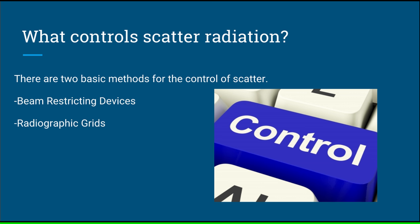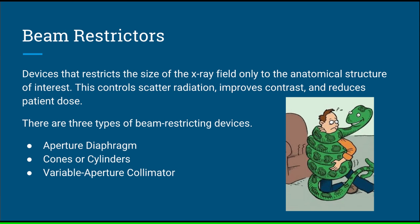What controls scatter radiation? There are two basic methods for the control of scatter: beam restricting devices and radiographic grids. Beam restrictors are devices that restrict the size of the x-ray field only to the anatomical structure of interest. This controls scatter radiation, improves contrast, and can reduce the patient dose. There are three types of beam restricting devices: aperture diaphragm, cones or cylinders, and the variable aperture collimator.